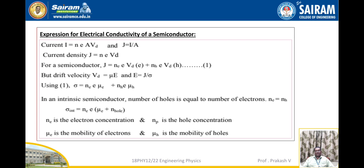In an intrinsic semiconductor, the number of holes equals the number of electrons, i.e., N_e equal to N_H. Therefore, σ_intrinsic equal to N_e × e × (μ_e + μ_H), where N_e is the electron concentration and N_P is the hole concentration, μ_e is the mobility of electrons, and μ_H is the mobility of holes.